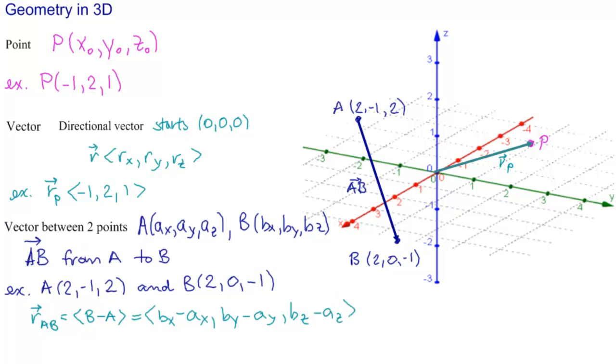And in our example, RAB, or this particular AB, would be B minus A. Let's write that: 2 minus 2, this 2 minus that 2, 0 minus minus 1, and minus 1 minus 2. So that would be 0, 1, and minus 3.